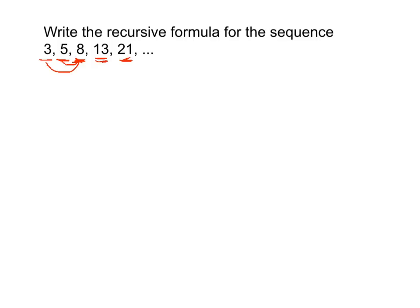So if you had to describe this sequence in words, what you'd say is, to get any term, you add the two previous terms. So we're going to say that in notation. To get any term, a sub n,